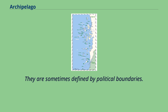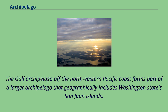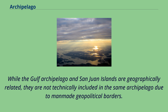Archipelagos are sometimes defined by political boundaries. The Gulf Archipelago off the northeastern Pacific coast forms part of a larger archipelago that geographically includes Washington State's San Juan Islands. While the Gulf Archipelago and San Juan Islands are geographically related, they are not technically included in the same archipelago due to man-made geopolitical borders.